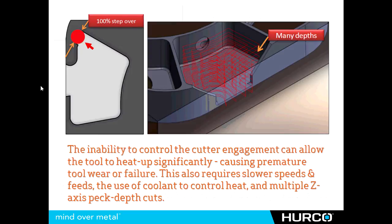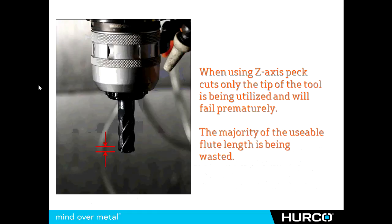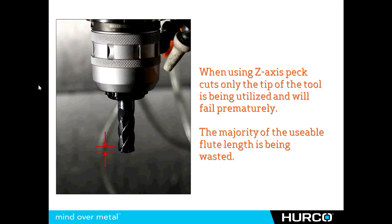The way we combat that is usually when cutting a feature like this pocket — because that tool is going to encounter unexpected material in all those corners especially — we have to slow down the speeds and feeds. We have to use coolant to control the heat. We have to use multiple peck depths to alleviate the pressures that tool is going to encounter because we can't control that efficiently. That's going to cause us to wear our tools only on the tip, wasting a majority of the usable flute length of a tool.